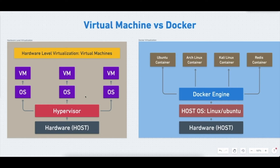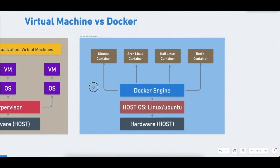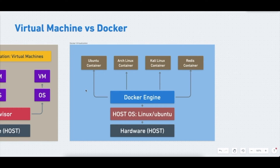On the other side, Docker uses OS-level virtualization. In this model, we have our hardware at the base, and on top of it we have only our host operating system — for example, Linux Ubuntu. On that Linux kernel, we install the Docker Engine, and using the Docker Engine we can run as many containers as we want. This is a very lightweight approach to virtualization.